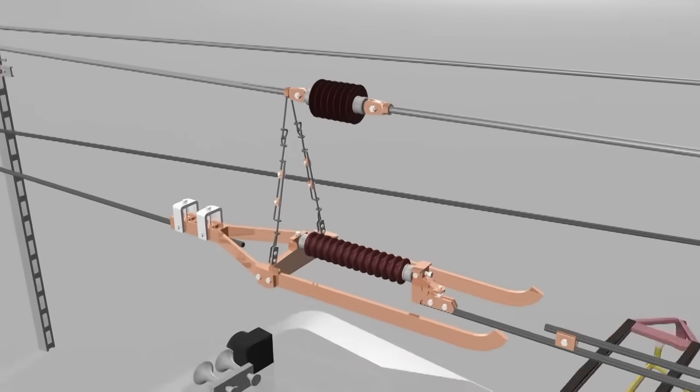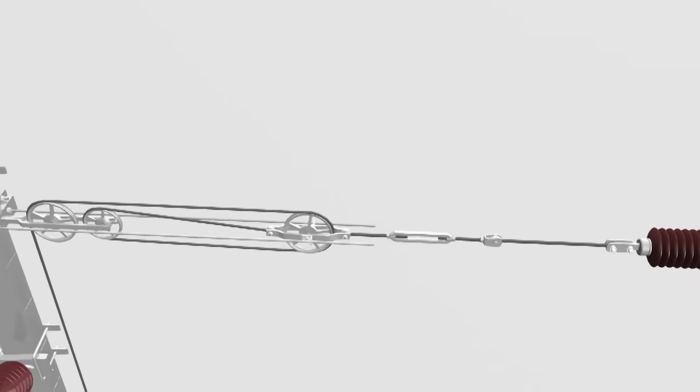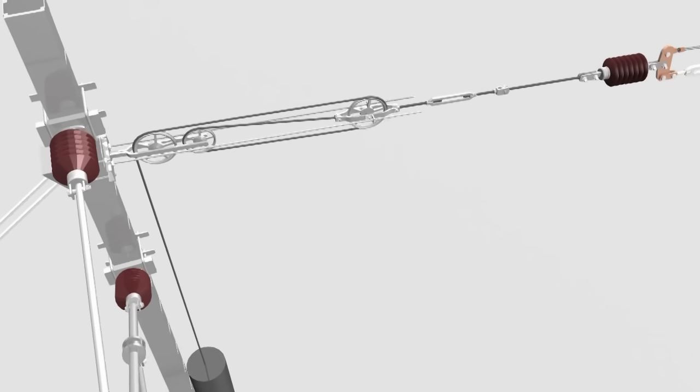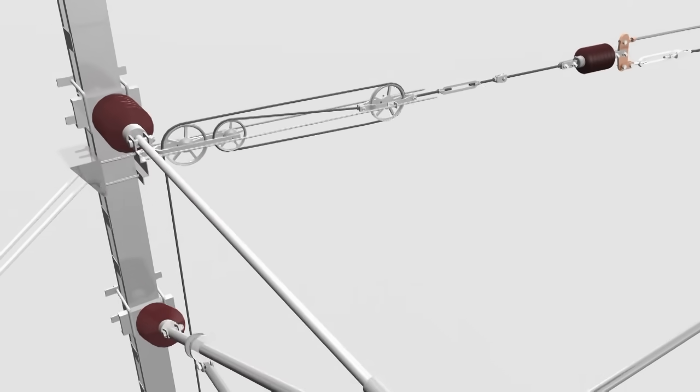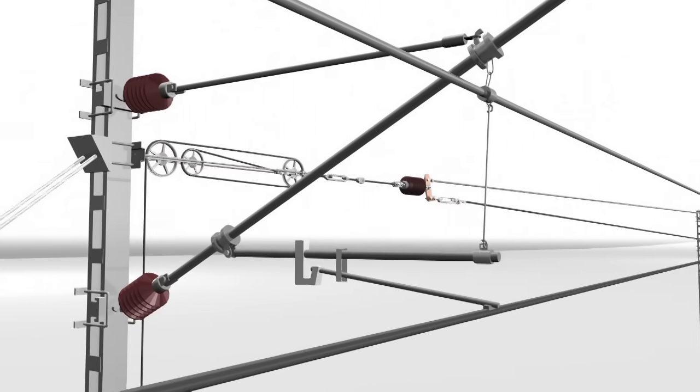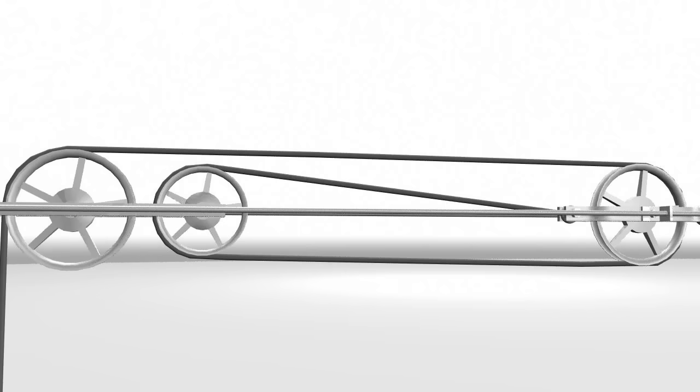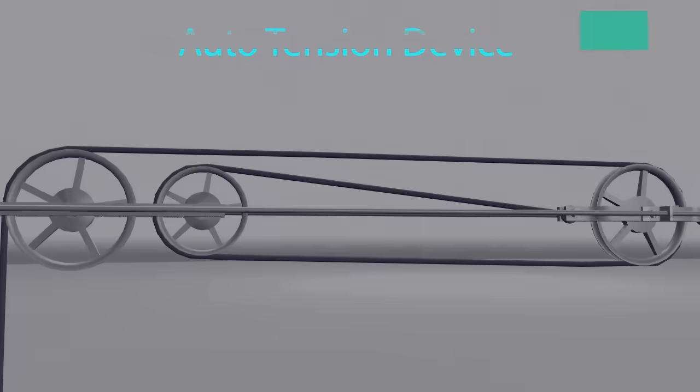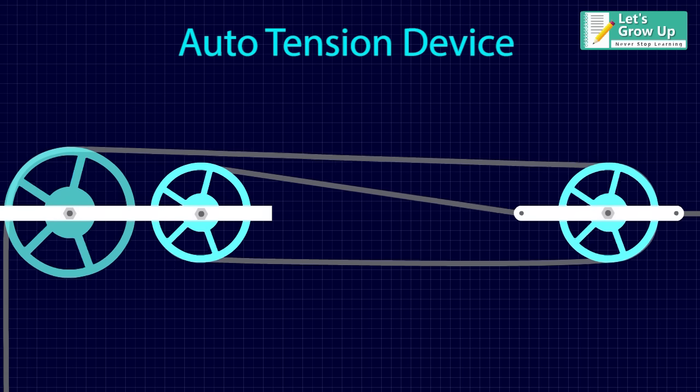Auto tensioning device is one of the important components of the overhead contact lines of the railways. It is used to overcome the expansion and contraction of the contact wire due to climate change. This device is based on a three pulley system. When the temperature rises or dips, the balance weight system adjusts automatically.